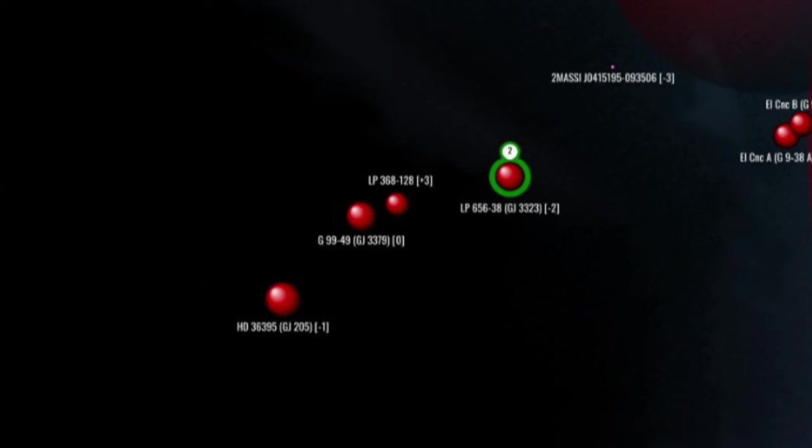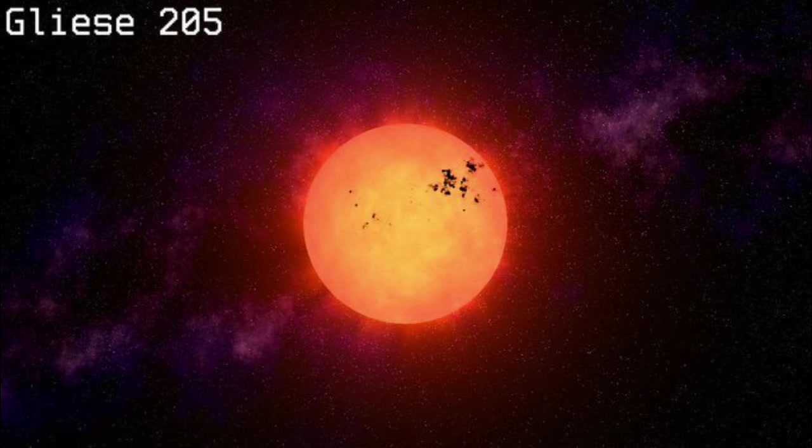One parsec south, we arrive at Gliese 205, a red dwarf a bit more than half the mass and radius of the Sun. In 2019, two planets were believed detected around Gliese 205, one of which would be in the star's habitable zone, but neither have been confirmed.